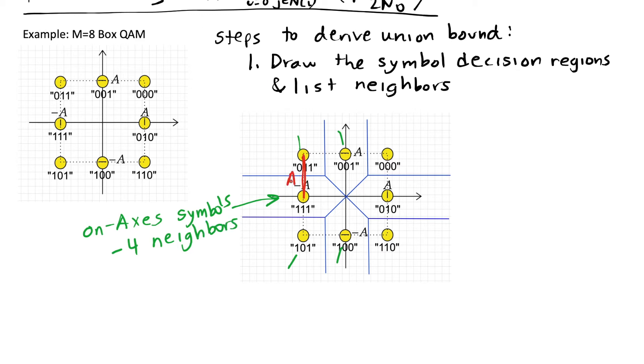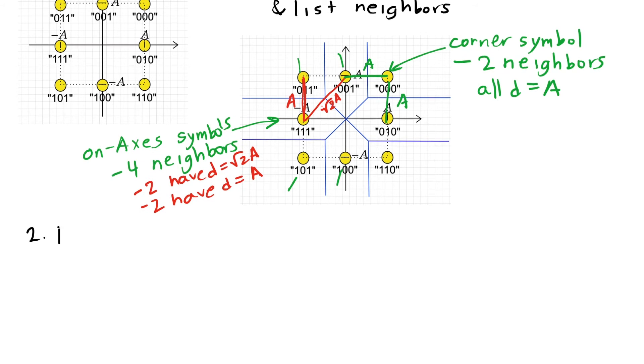And some of these symbols are separated by distance a. Some of these symbols are separated by this distance, which would be square root of 2a. So two of the neighbors have distance square root of 2a, two of them have distance a. That's going to be true for every on-axis symbol. The other type of symbol are the corner symbols. They have two neighbors that are distance a from each other. So now I've finished that first step.